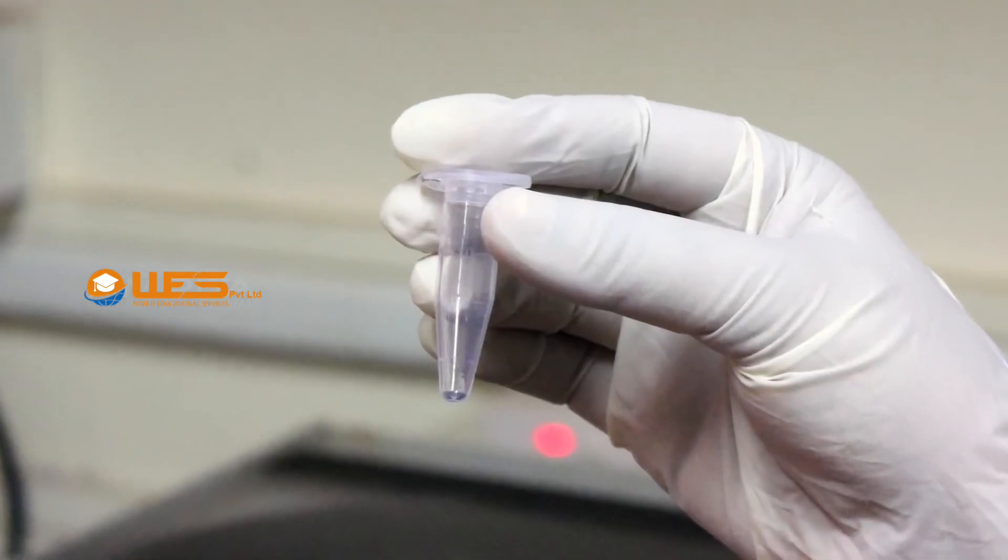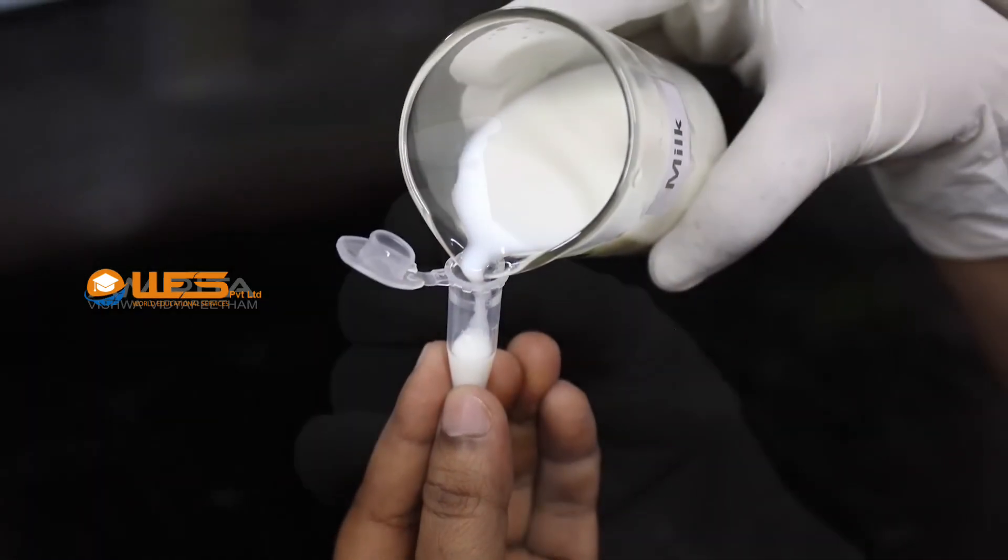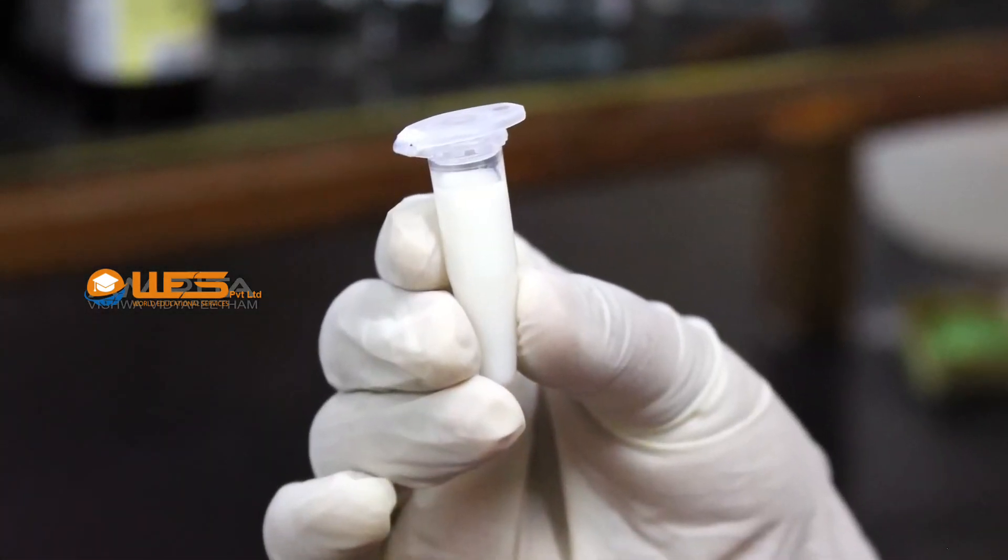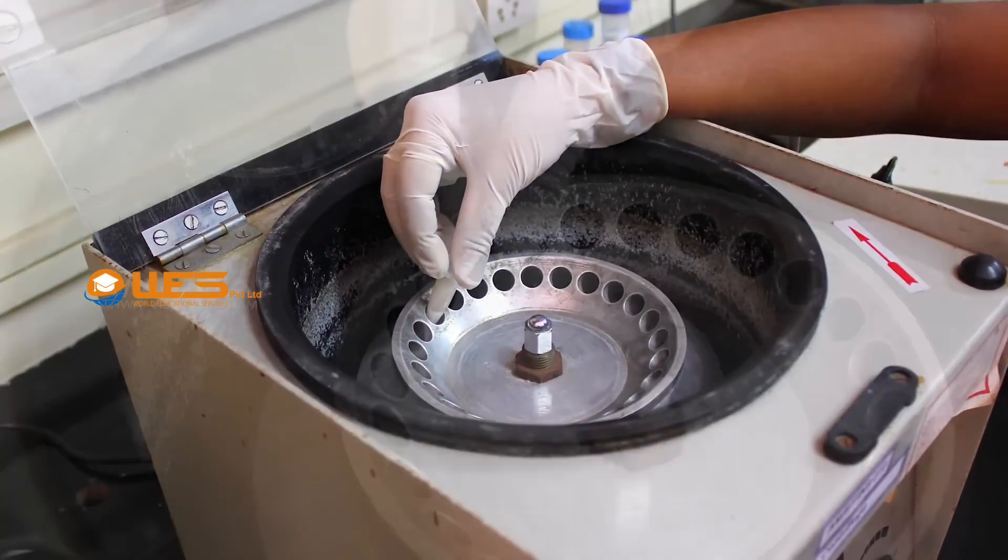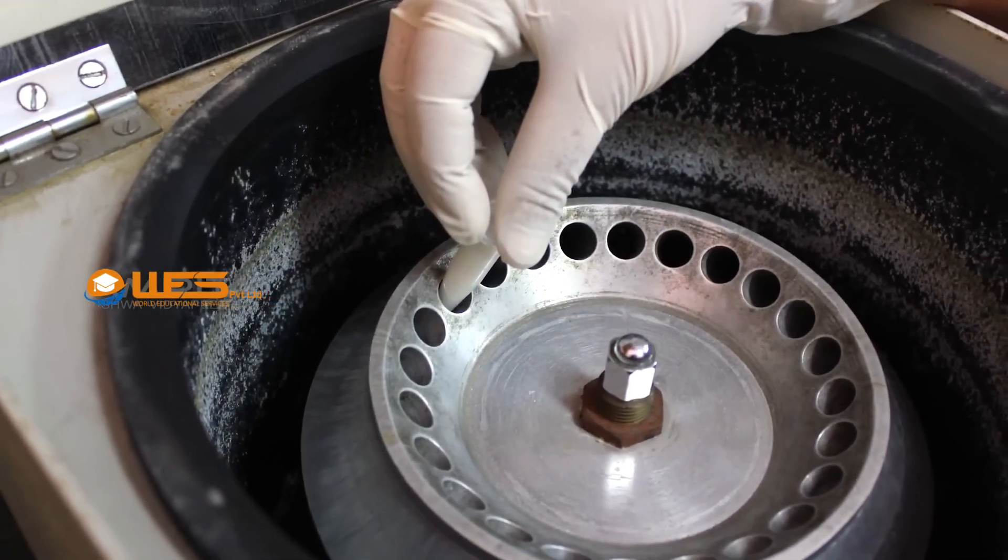Take a centrifuge tube and fill it three-fourths full of milk. Place the centrifuge tube in one of the holes of the rotor of the centrifuge.